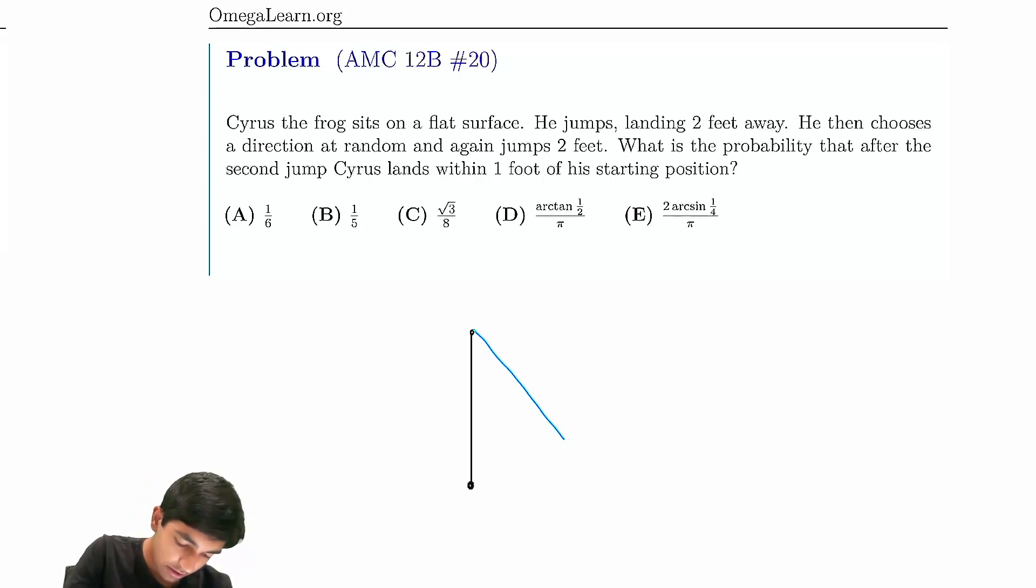So we got a two here. Imagine if Cyrus jumps right back, that would obviously be zero. So marking one foot in each direction, there'll be some point where this distance is exactly one, and beyond that point it's going to be more than one. As this theta gets bigger, this distance will get bigger. So two, two.